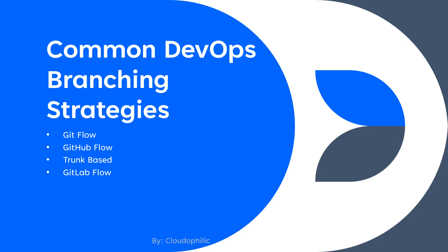The last strategy is GitLab Flow. In GitLab Flow, development happens in one of the environmental branches, and verified and tested code is merged to other branches until it reaches the production branch.